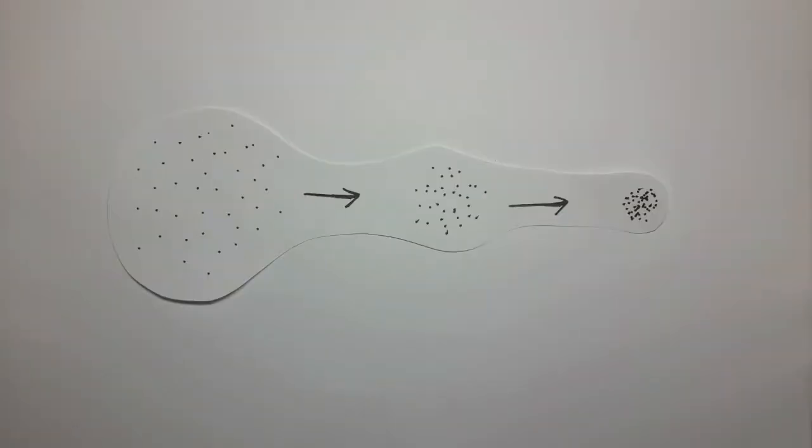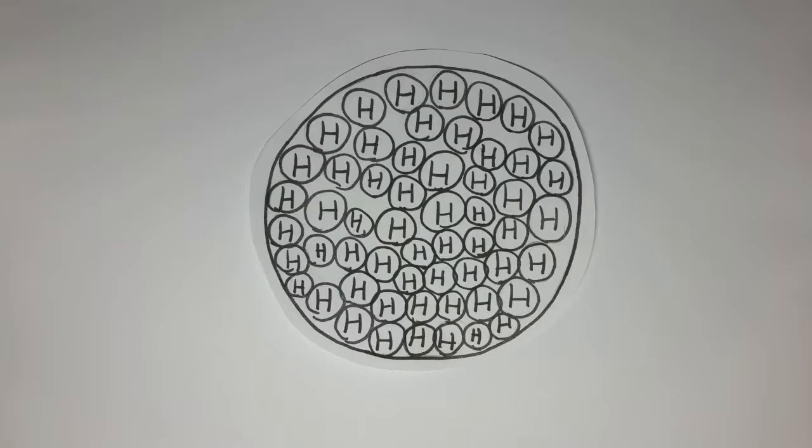First, hydrogen atoms condense into an atom cloud due to the gravitational pull of the atoms. When the hydrogen atoms get close enough to each other, they get denser every second.